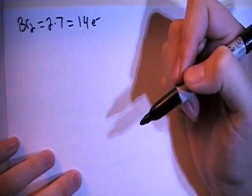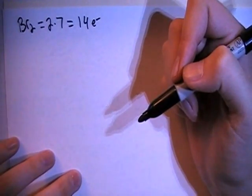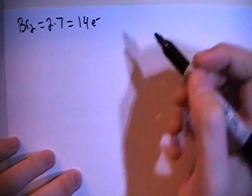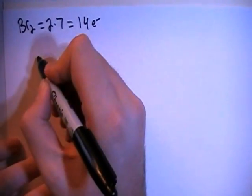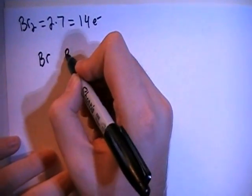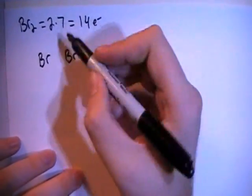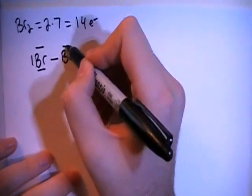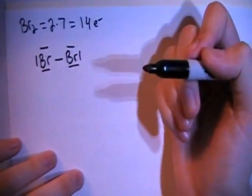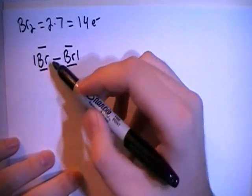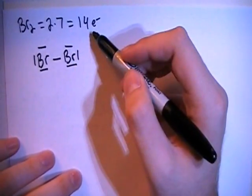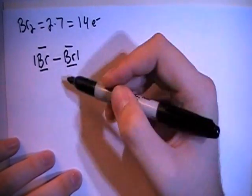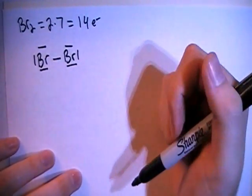Now this is basically just the diatomic for bromine, so Br2. So we're going to have the two bromine atoms, and we can start by single bonding them together and just filling in the octets for each of the atoms. And if you count up the electrons, you have 2, 4, 6, 8, 10, 12, 14, which is our total, so that means that this is actually going to be the final structure.